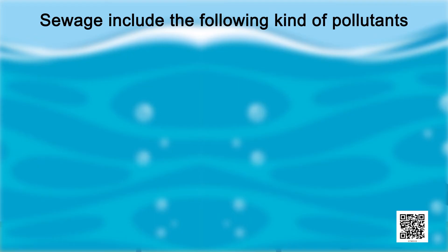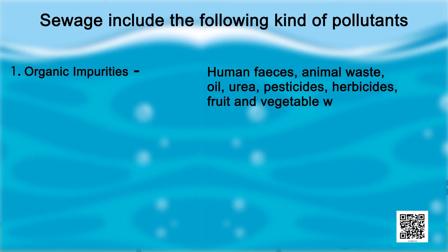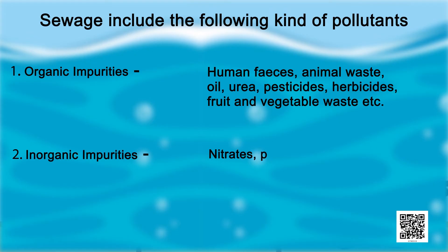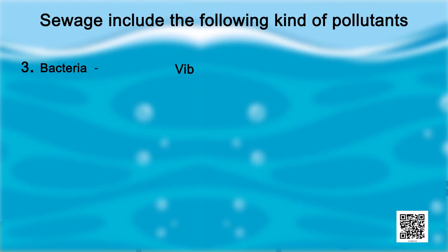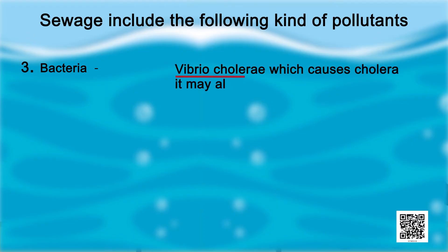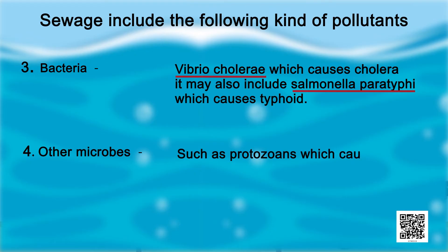Sewage includes the following kinds of pollutants. The first category is organic impurities like human faeces, animal waste, oil, urea, pesticides, herbicides, fruit and vegetable waste etc. Inorganic impurities like nitrates, phosphates and metals. Sewage may contain bacteria such as Vibrio cholerae which causes cholera and Salmonella paratyphi which causes typhoid. It may also include other microbes such as protozoans which cause dysentery.